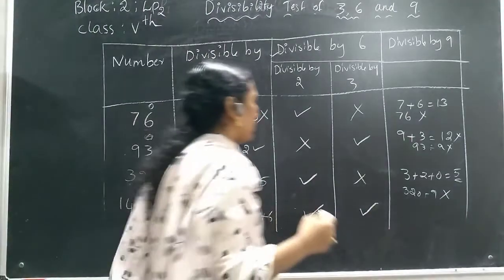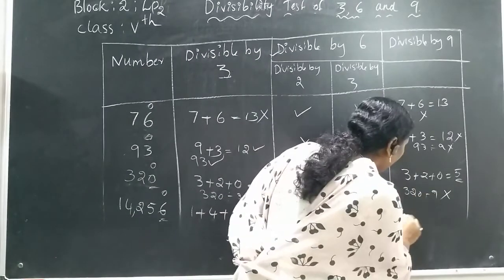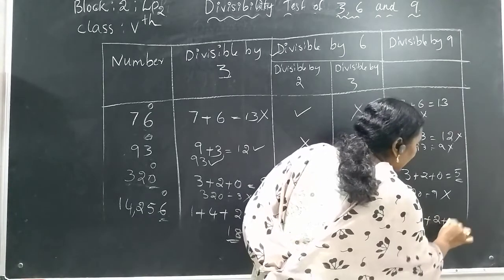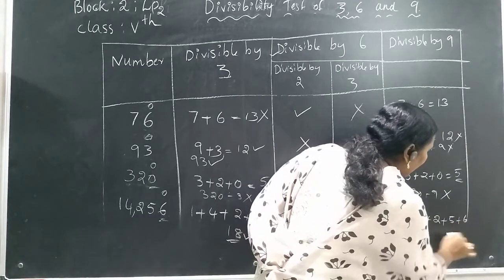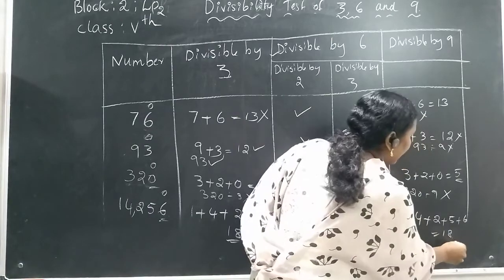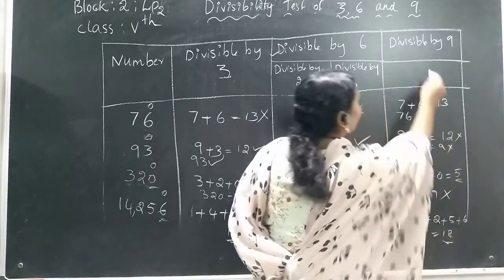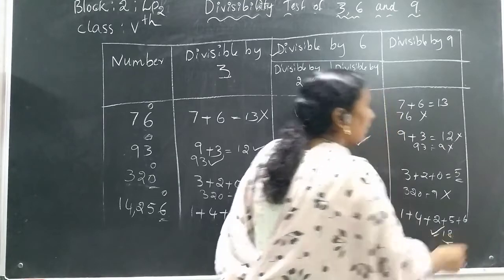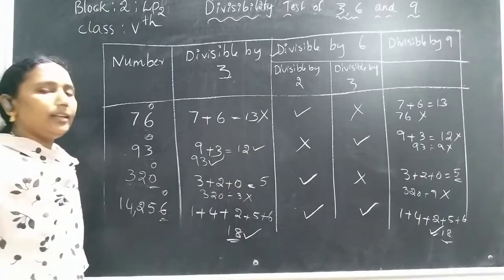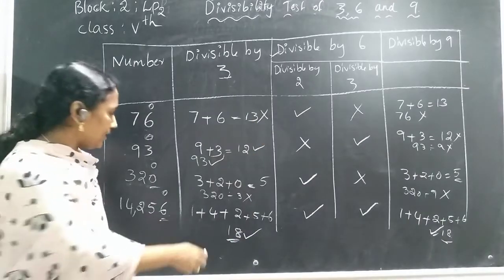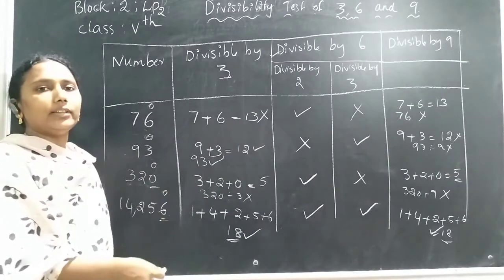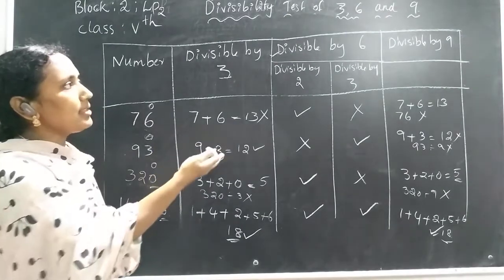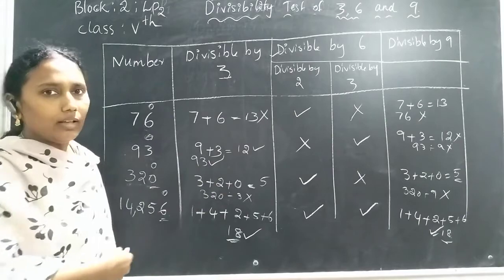For divisibility by 9: we add 1 plus 4 plus 2 plus 5 plus 6, which equals 18. Is 18 in the 9 times table? Yes — 9 times 2 is 18. So 14,256 is also divisible by 9. It is easy to determine whether a given number is divisible by 3, 6, and 9 when we follow these rules.